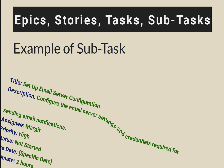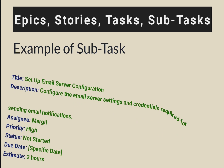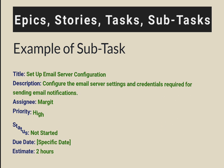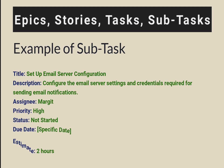A subtask example could be: set up email server configuration. Description: configure the email server settings and credentials required for sending email notifications. Assignee: Mark. Priority: high. Status: not started. Due date: a specific date. Estimate: 2 hours.